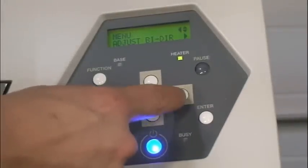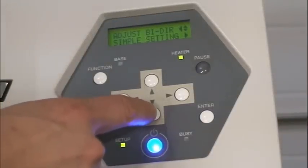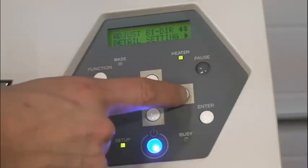To adjust the detail settings, press the down key, followed by the right key. Press down two more times to access the detail settings. Press right and then enter to perform another test print.